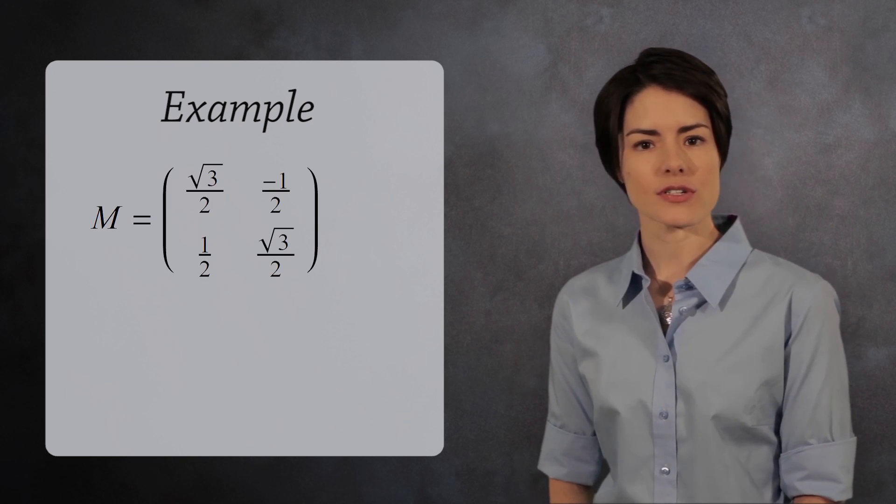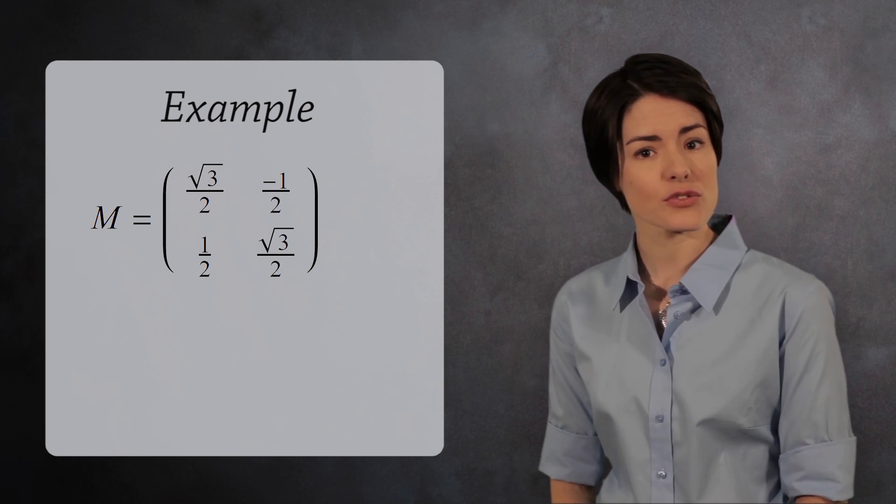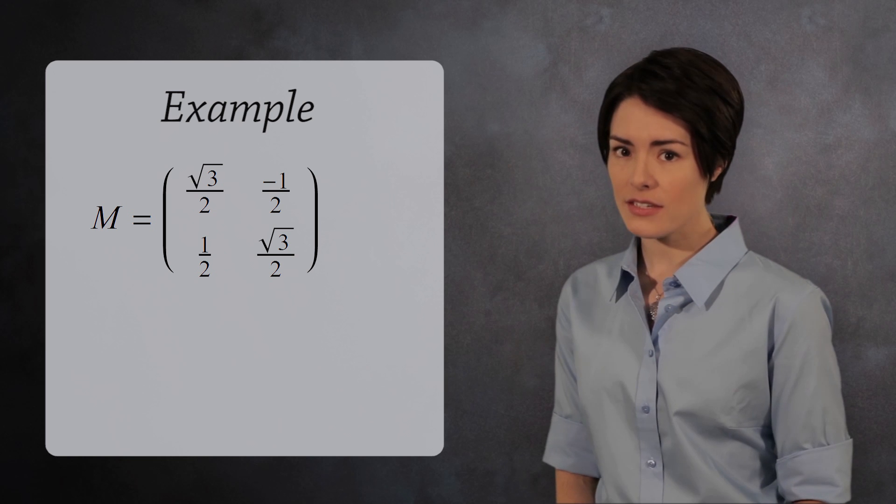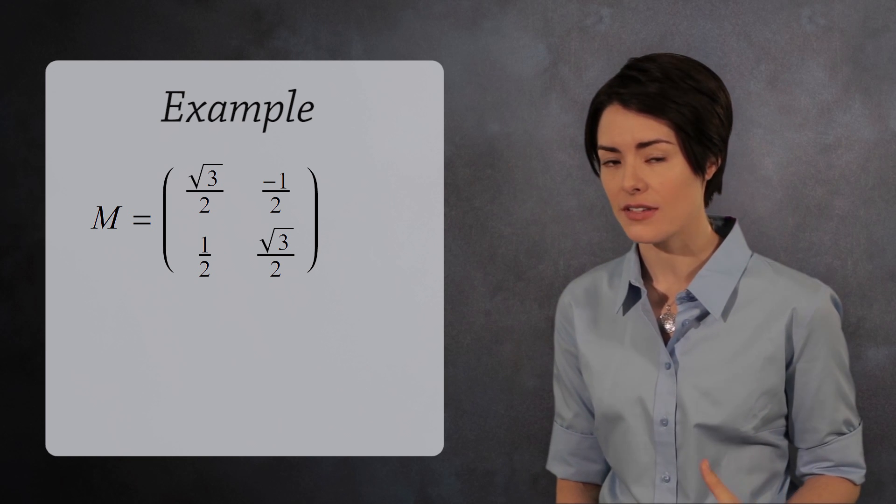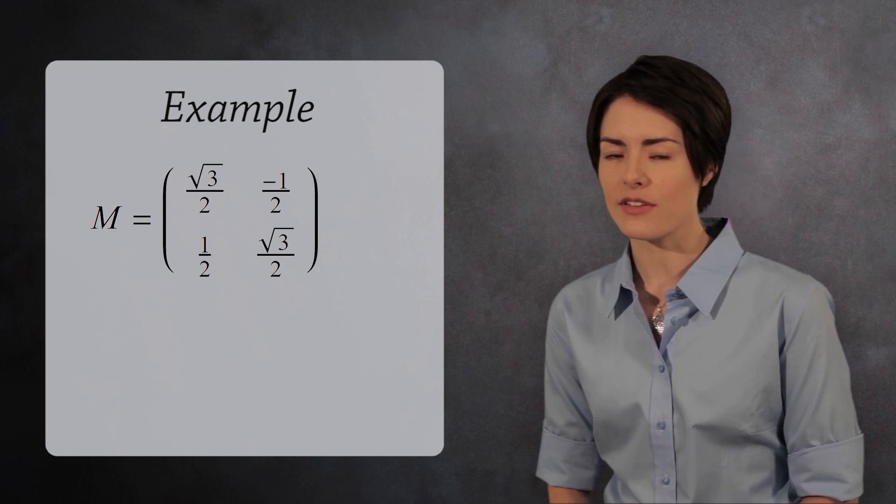Consider the matrix m with entries the square root of 3 over 2, negative 1 half, 1 half and the square root of 3 over 2. This is known as a rotation matrix because it rotates vectors in the plane. Now look at the powers of this matrix.